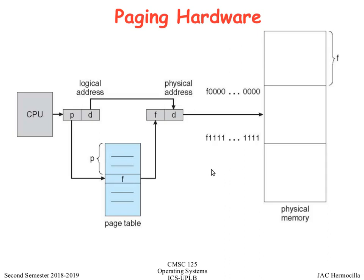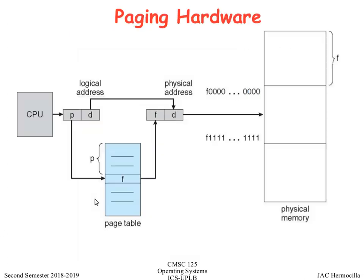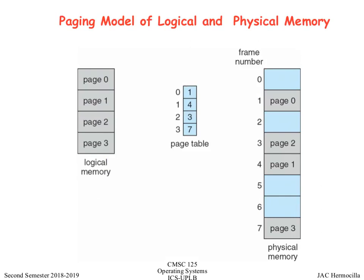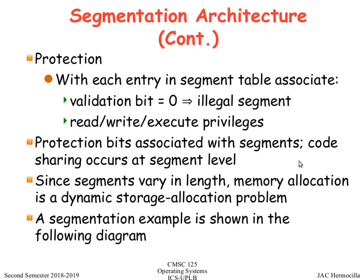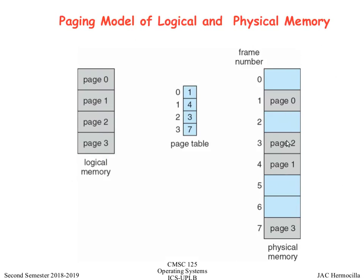The important thing to remember is fixed-size blocks — fixed page size equals fixed frame size. For example, if a process requires four pages, the OS sets up a page table mapping: page 0 maps to frame 1, page 1 maps to frame 4, and so on. This is nearly the same as segmentation, but the key difference is that pages are fixed size.